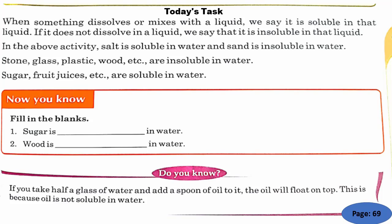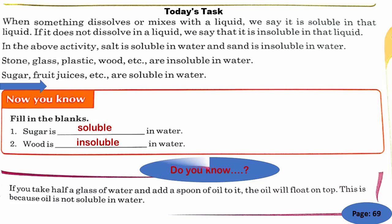Stone, glass, plastic, wood, etc. are insoluble in water. Sugar is soluble in water whereas wood is insoluble in water. If you take half a glass of water and add a spoon of oil to it, the oil will float on top. This is because oil is not soluble in water — oil cannot dissolve in water.